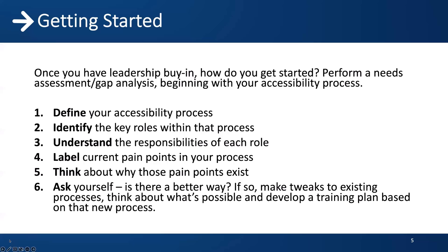Identify critical roles within that process. Everyone's responsible for accessibility, but not every team member needs to be an expert in accessibility requirements. Unless their role is an accessibility expert, it's probably not feasible to train them on everything there is to know about digital accessibility. Instead, focus on the requirements pertaining to their role in creating or checking digital content. Understand the responsibilities of each role — for example, it might not be feasible for your designers to tell your developers how to mark up a component to comply with WCAG requirements. Identify the training each team member needs to understand their role in ensuring accessibility.